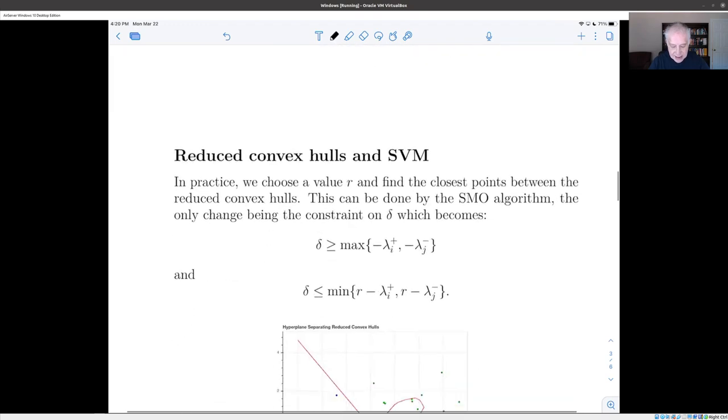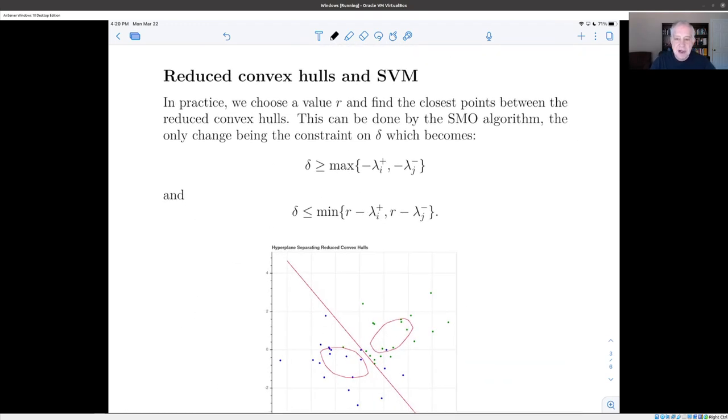And we replace our analysis of trying to find the closest point between the two convex hulls to finding the closest point between the reduced convex hulls. And you'll notice that some of the points lie outside of the reduced convex hull. And what's nice about this is that actually we don't have to change very much. All that we have to do is to go back into our analysis of the SMO algorithm and add a constraint. So you remember we had this situation where we had a quadratic polynomial, and we had a constraint value, where delta had to be bigger than that. And now, depending on our choice of r, we're also going to have a constraint on the other side, where delta has to be less than that constraint. It has to be less than or equal to the minimum of r minus lambda i plus and r minus lambda j minus.